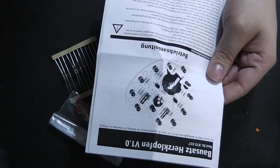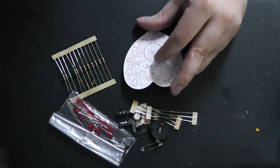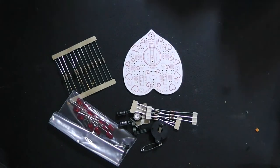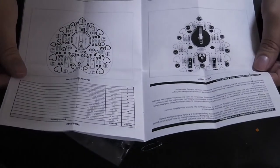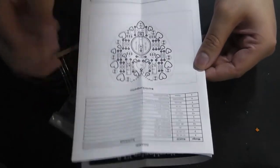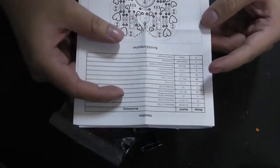By the way, there is the instructions manual. They did not print the part values onto the printed circuit board, so we have to take a look inside. What is this? Safety instructions. We don't need those. There are the part information. I don't know if you can see this at the camera, but I hope you can.